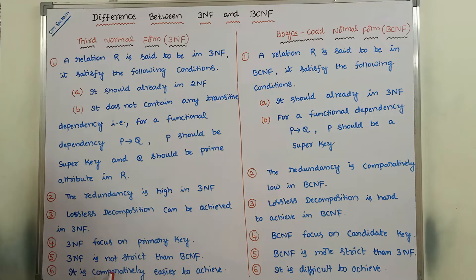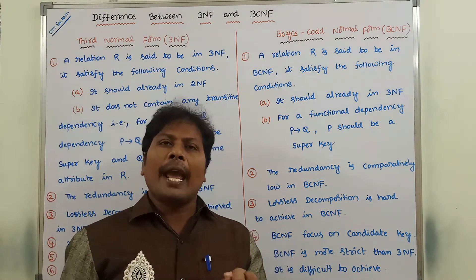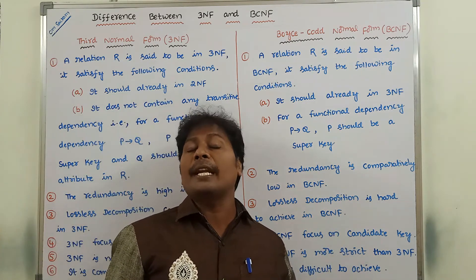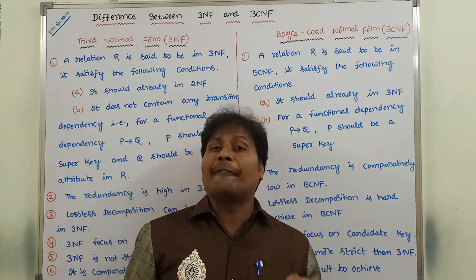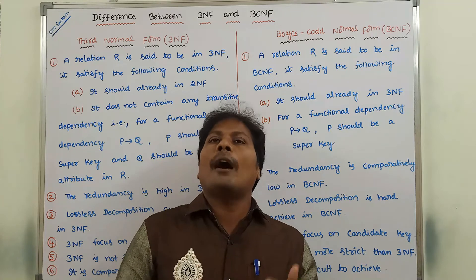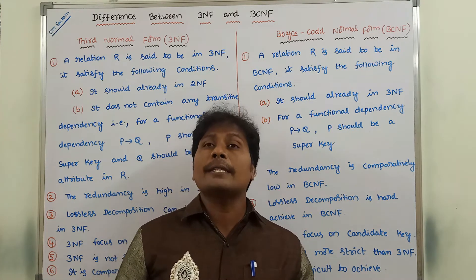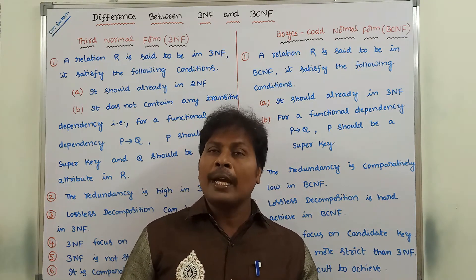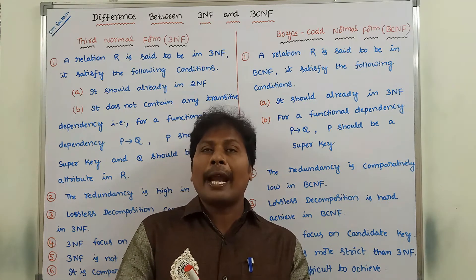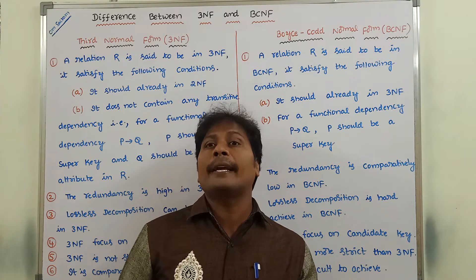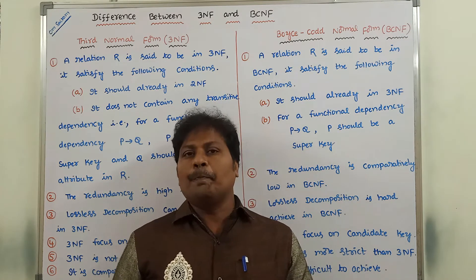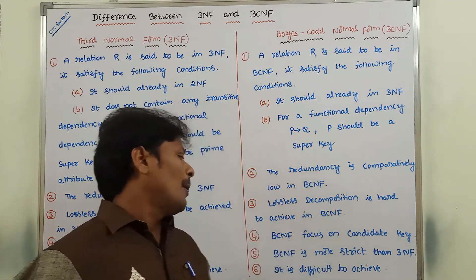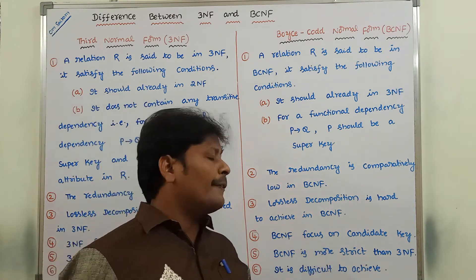It is comparatively easier to achieve 3NF. Achieving BCNF is more difficult because to achieve BCNF, the relation should satisfy first normal form, second normal form, and third normal form. In addition to that, every attribute on the left-hand side of a functional dependency should be a super key. Because of that condition, it is very difficult to achieve BCNF.